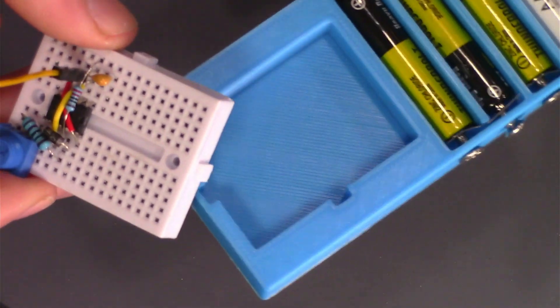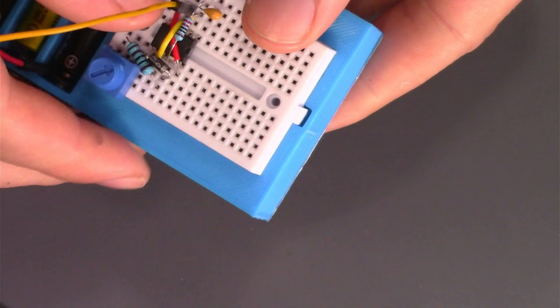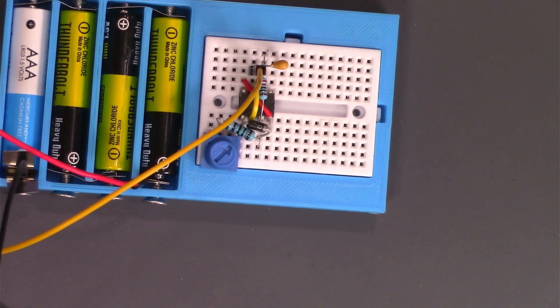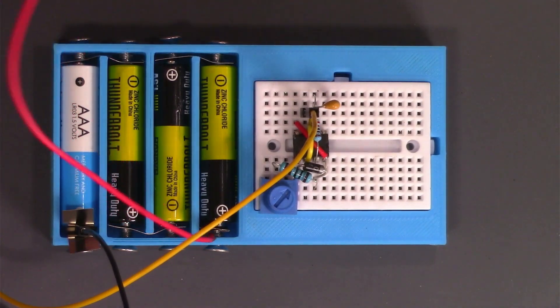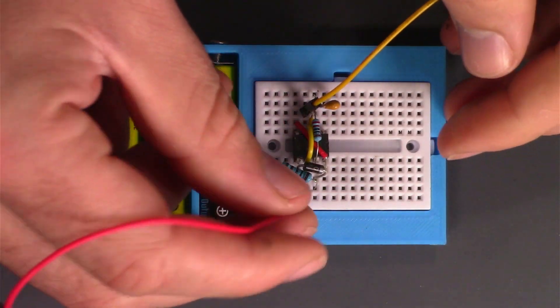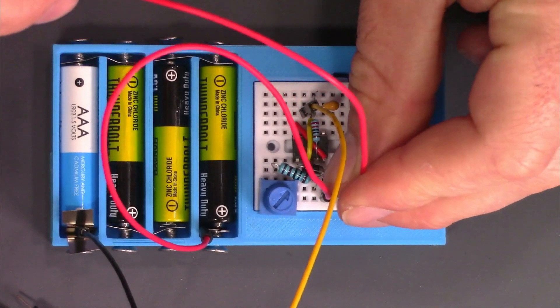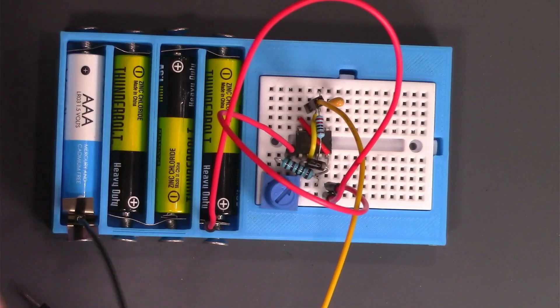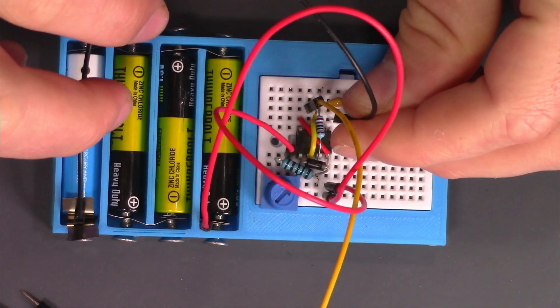Now we need to add power and ground to this system. I have a really useful 3D printed battery breadboard holder. I'll plug in the breadboard to this part where it nests in perfectly and I have batteries that could provide 4.5 volts. I'll connect power to position eight of the 555 timer and then I'll add power to the potentiometer. I'll attach the negative end of the batteries to position one of the 555 timer.